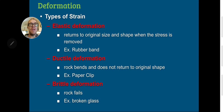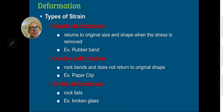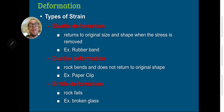Ductile deformation is when you bend or strain the rock to the point where it does not return to its original shape, but you're not fracturing it. A good example of something that displays ductile deformation is a paper clip. Brittle deformation is when the rock fails brittlely and gets broken, like in a fault. An example of this would be breaking a glass on the floor.